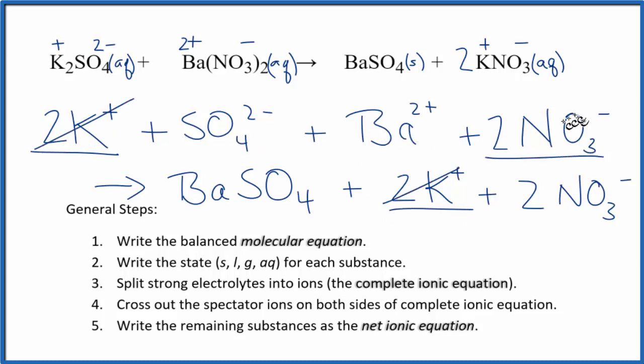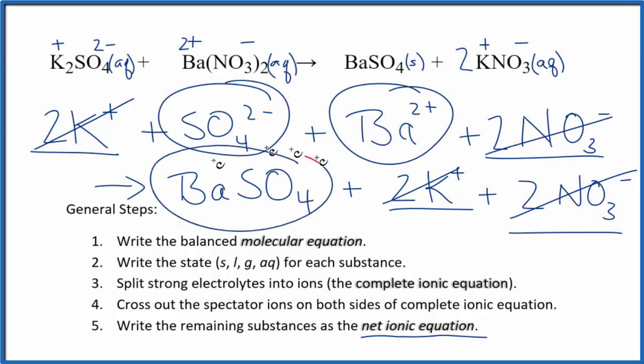Let's see, two nitrates in the reactants and then two nitrates in the products. So those two, just cross them out. That'll leave us with the net ionic equation. So we have our sulfate, we have our barium ion, and then we have our barium sulfate.